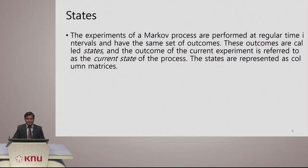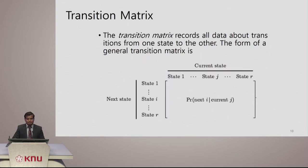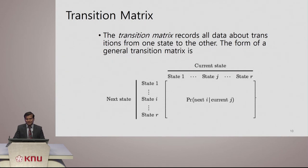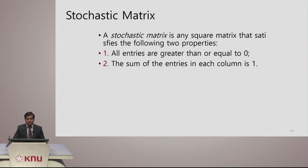In this process we have different states based on the outcome — these outcomes we call states, and the outcome of the experiment is referred to as the current state. Here is the transition matrix that records all data about the transition from one state to another state. With this stochastic process, all entries are greater than or equal to 0 and the sum of the entries in each column should be 1.